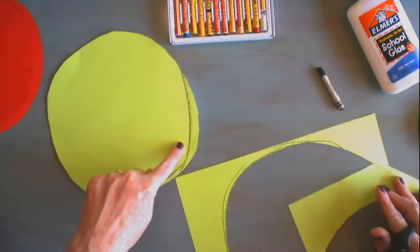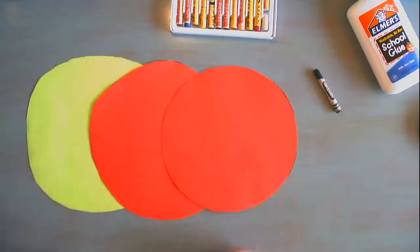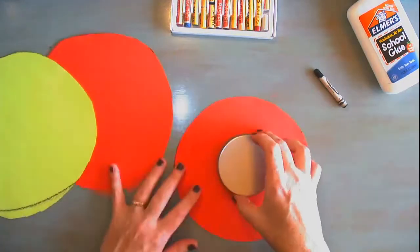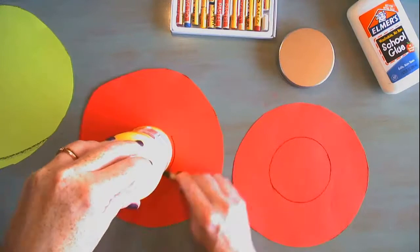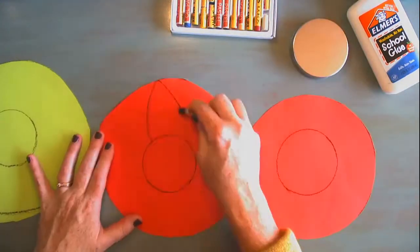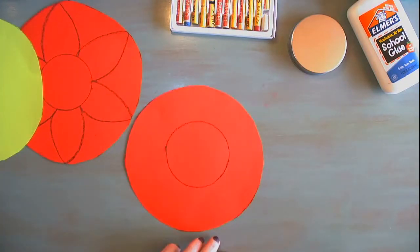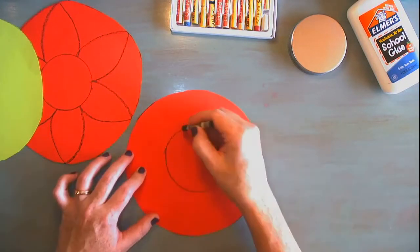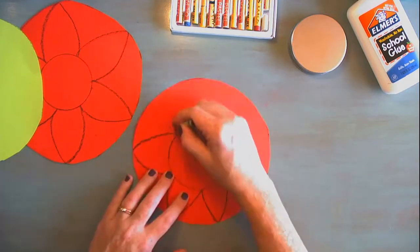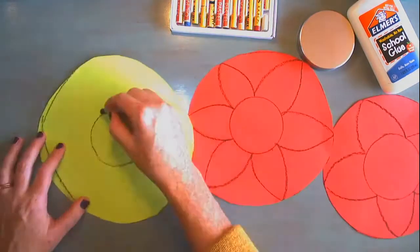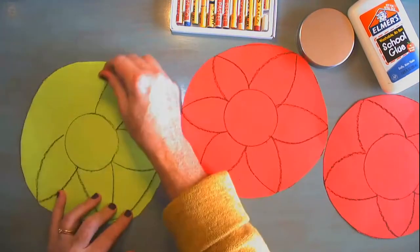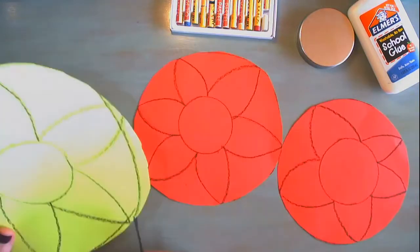I chose not to use the bowl as a tracer to show you it doesn't have to be perfect. Now you're going to trace a circle using whatever you can find in the center of your red and green circles and then you're going to draw little flower petals going around the circle to the edge of the paper.